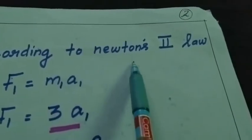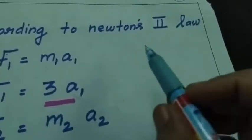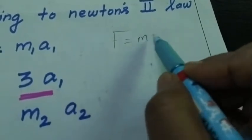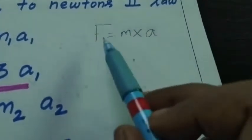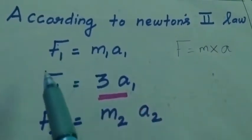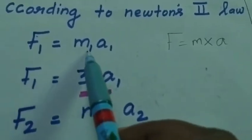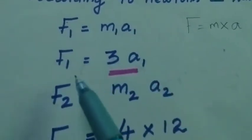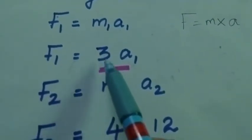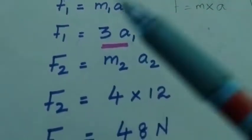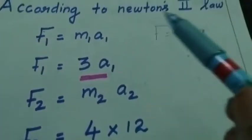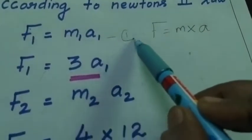According to Newton's second law, we know that the formula is: force equal to mass into acceleration. To calculate the force we multiply mass into acceleration. So here they give two forces: f1 equal to m1 into a1, so f1 equal to — we know the mass of the first object — 3 into a1. That is the first equation.